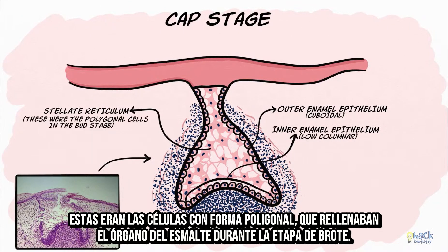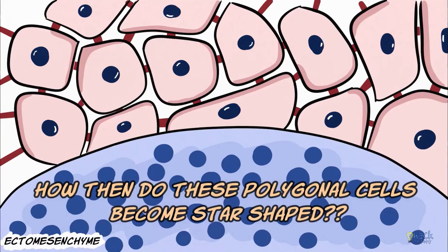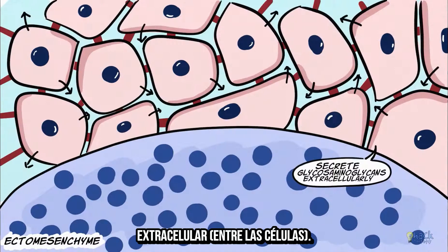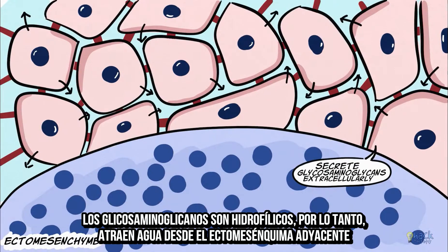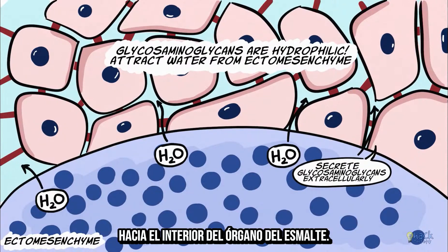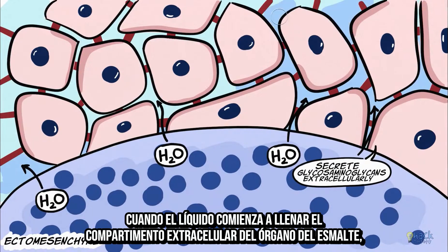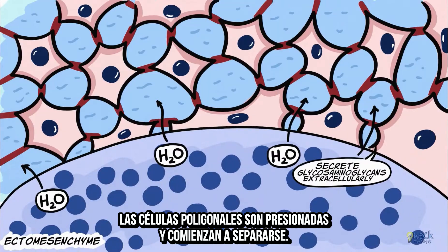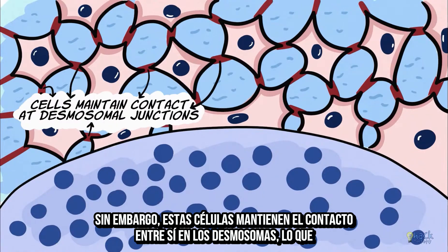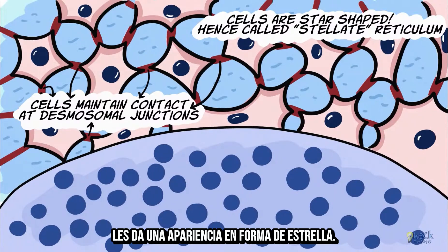The stellate reticulum cells were the polygonal shaped cells which filled the enamel organ during the bud stage. These polygonal cells synthesize and secrete glycosaminoglycans into the extracellular compartment between the cells. Glycosaminoglycans are hydrophilic and hence attract water from the adjacent ectomesenchyme into the enamel organ. As fluid fills the extracellular compartment, the central polygonal cells start to separate and are pushed apart. However, these cells maintain contact with each other at the desmosomal junctions, giving them a star-shaped appearance — they are thus called stellate reticulum.